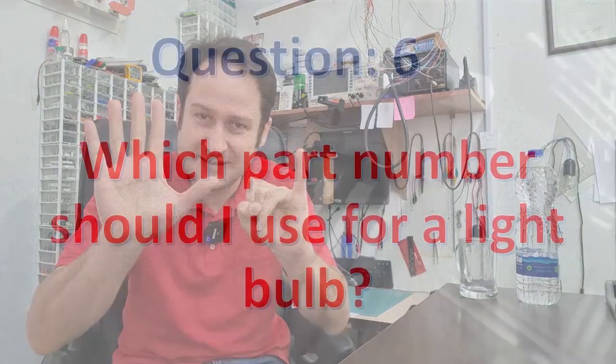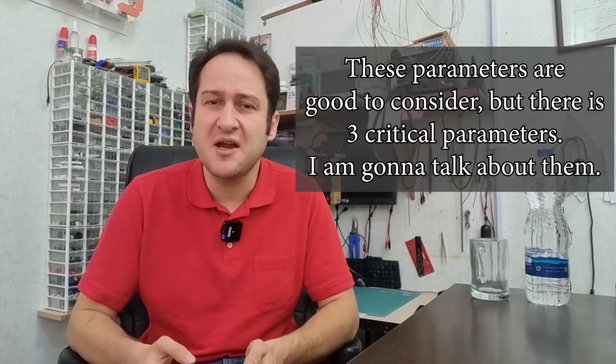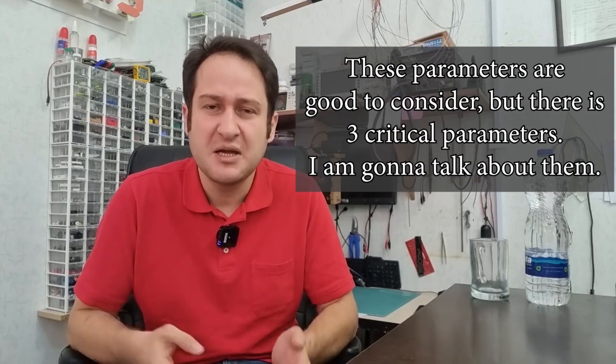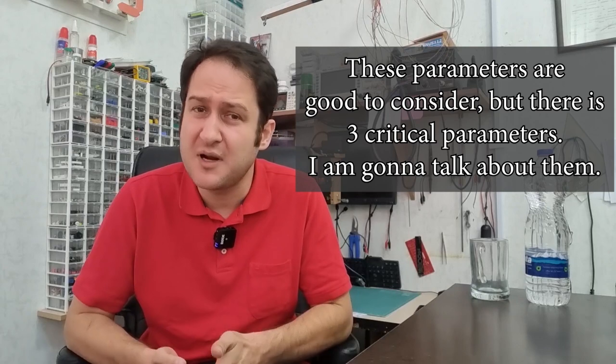Question number 6: Which part number should I use for a light bulb? Depending on maximum current, power dissipation, and some other considerations, you can choose best part number for a particular load. Other factors like shape, size, price, package, weight, availability, market, thermal considerations, and so on. All of these parameters are available in datasheet except price and market issues.